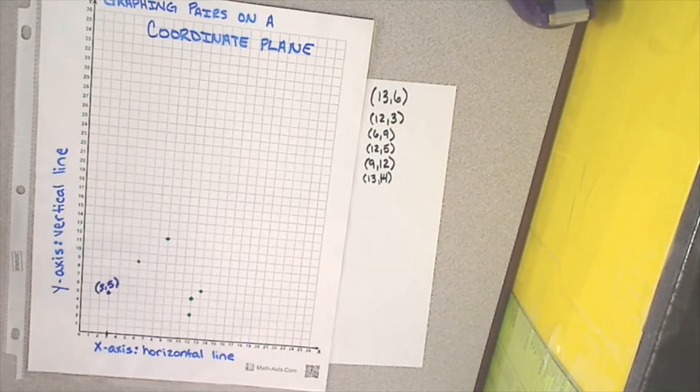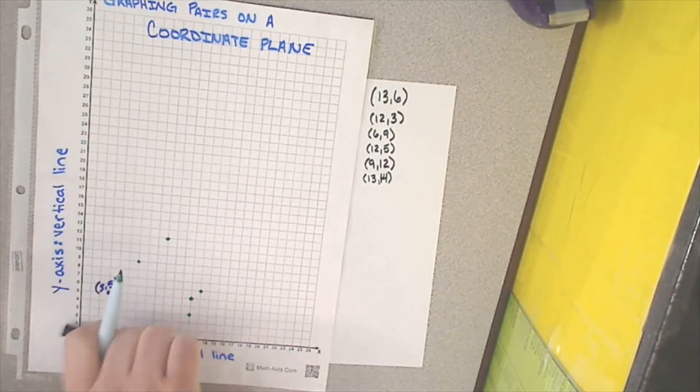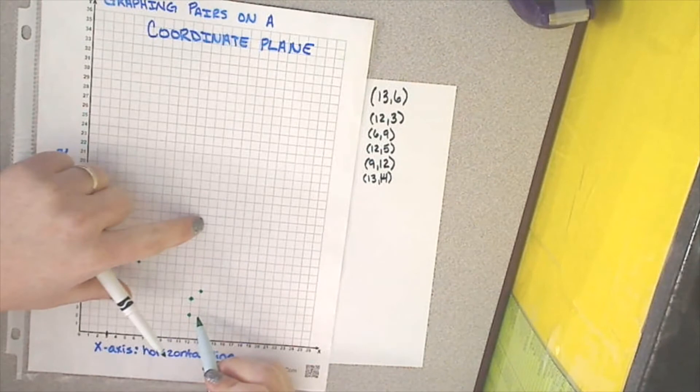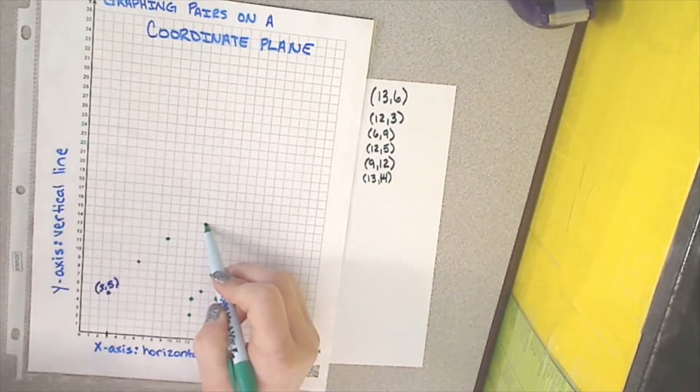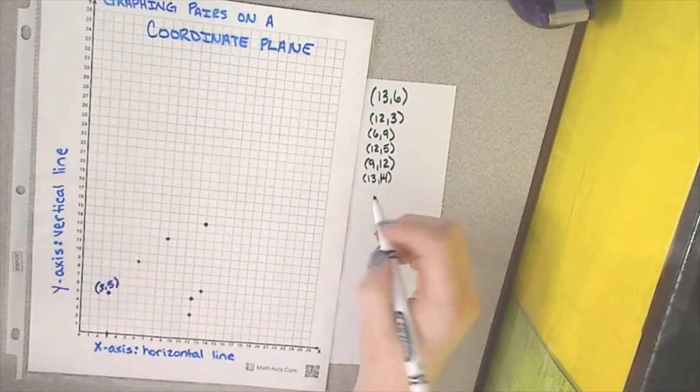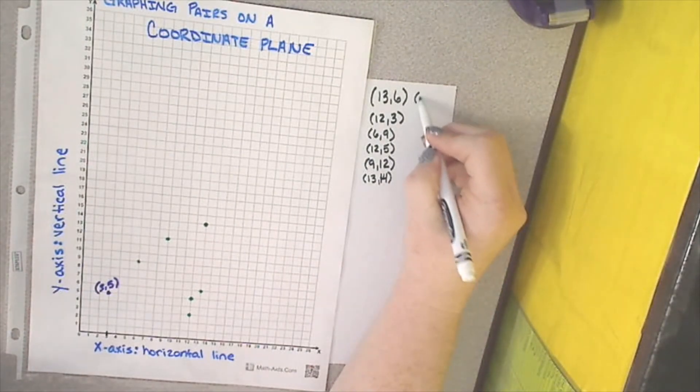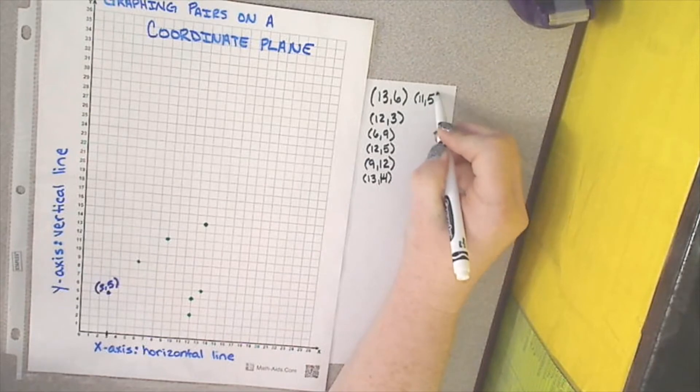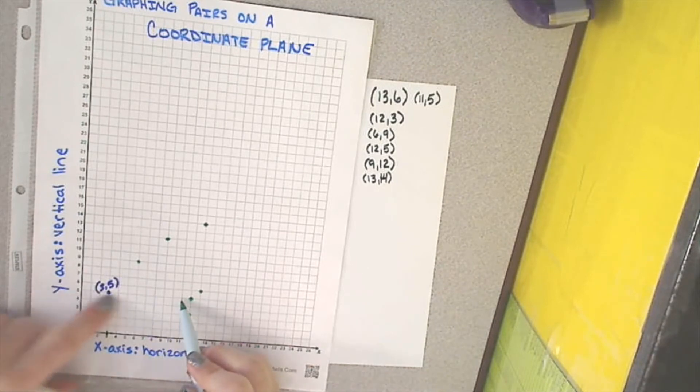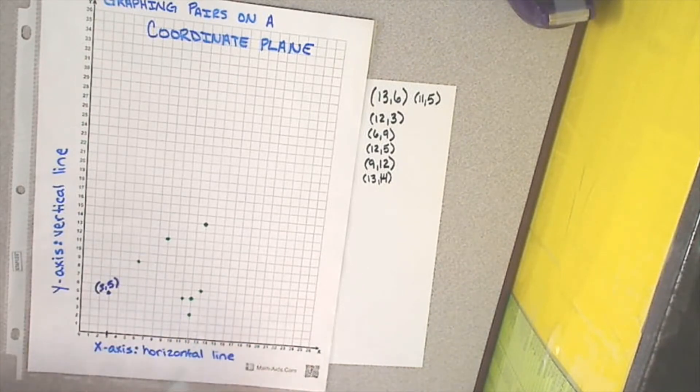My markers are running away on me. Come to 13, and we're going to go up until we find where 14 and 13 intersect. Now, we need to find 11 comma 5. Come down to 11. There's 5. And we're going to go up until we find where 11 and 5 intersect.